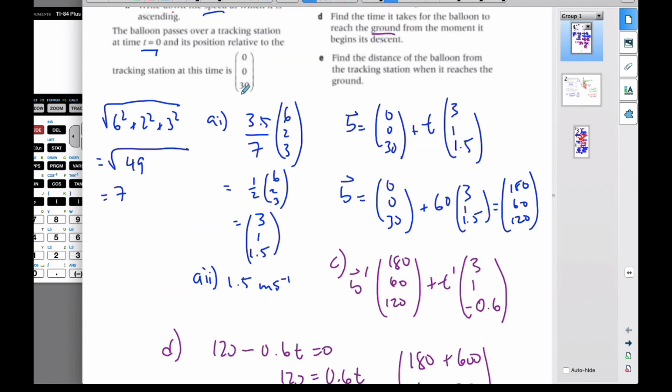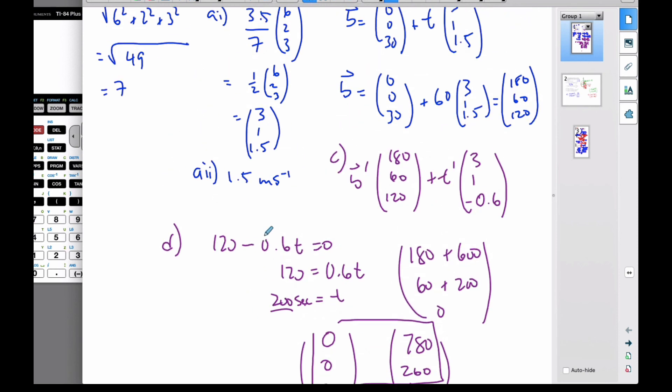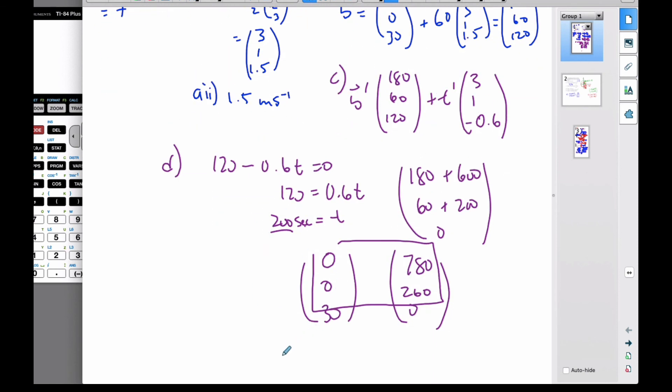The original tracking station was at (0, 0, 30). Now, I want to know the distance away. The elevation doesn't affect the horizontal distance. I take the square root of 780 squared plus 260 squared. That gives me the total overall distance, which is 822 meters apart.